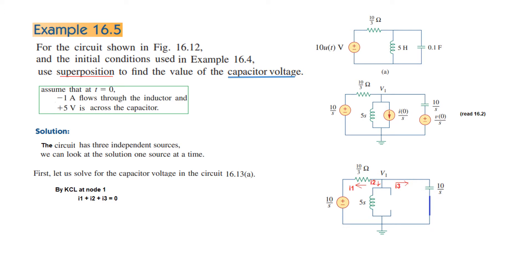If we mark three current directions, by KCL at node one with all three leaving: i1 + i2 + i3 = 0. Writing in terms of sources: the first term is (v1 − 0) divided by 10/3. For i2, noting the current direction is opposite to the main current direction, we put a minus sign, giving (v1 − 10/s) divided by that resistance.